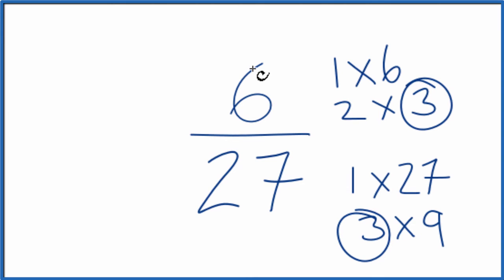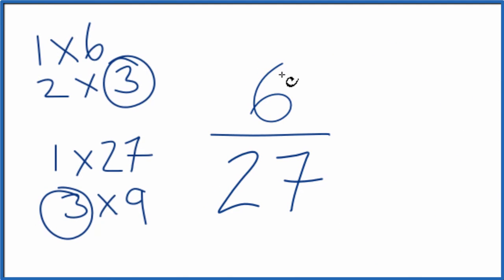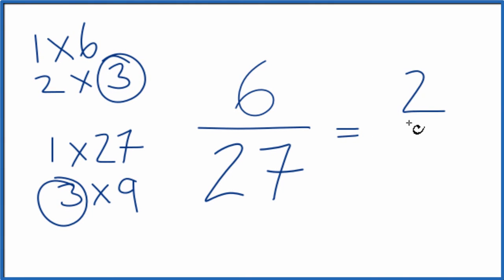So we can divide 6 by 3 and 27 by 3, then we'll have reduced our fraction here. Let's move these over here. So we divide 6 by 3 and we get 2. We divide 27 by 3, we get 9. And we've reduced the fraction 6/27 down to 2/9.